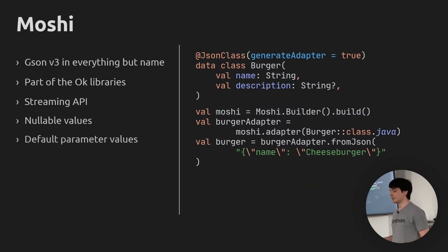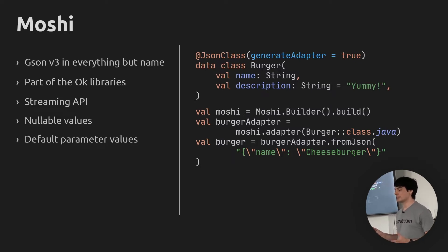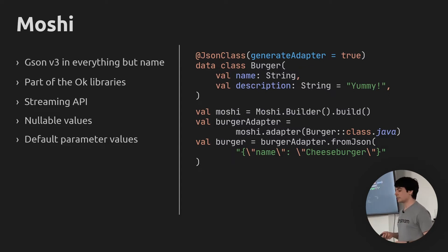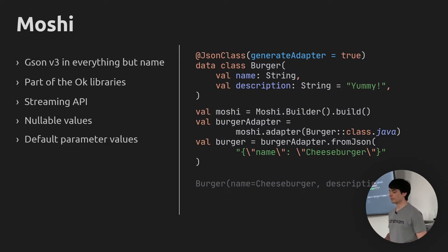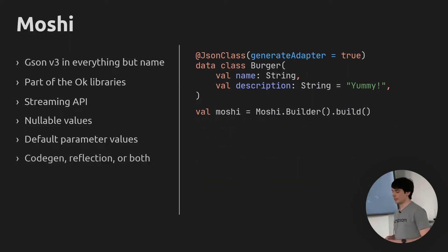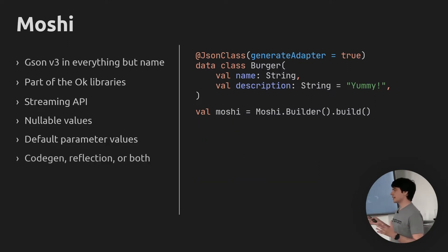Moshi can also handle default parameter values. Instead of making description nullable, if we assume all burgers are yummy by default and put that into a default parameter, then parsing the same string without a description will now give us the default value in that property. Moshi can be set up with CodeGen, Reflection, or a combination of both.